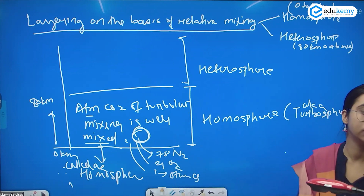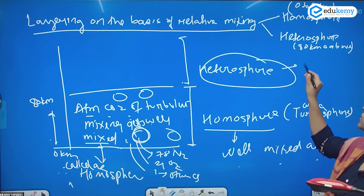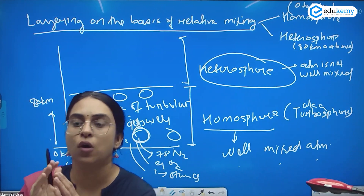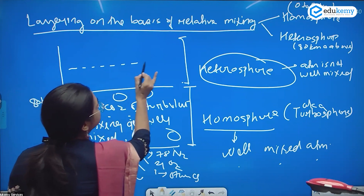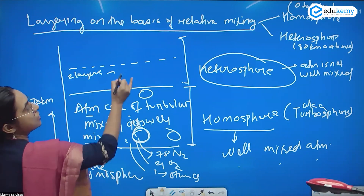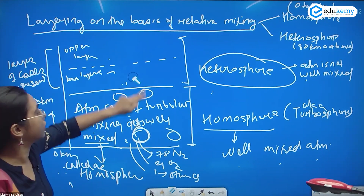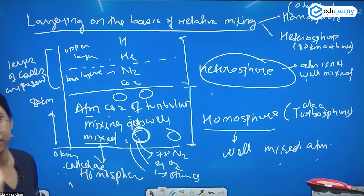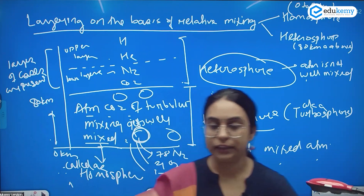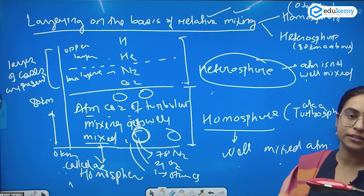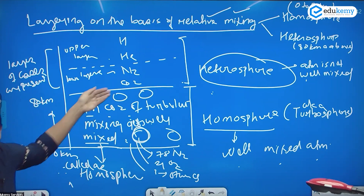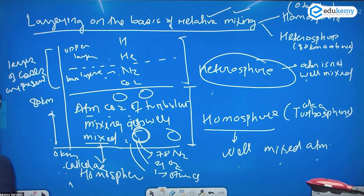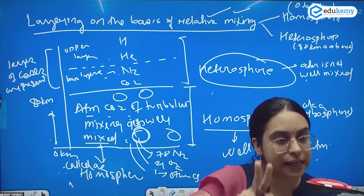In the heterosphere, above 80 kilometers, the atmosphere is not well mixed. Because the atmosphere is not so well mixed, it has distinct layers: in the lower layer you have nitrogen and oxygen (N₂, NO₂), and in the above layers you have hydrogen and helium. This was the second way of the layering of the atmosphere — with respect to relative mixing: up to 80 kilometers is homosphere, above 80 kilometers is heterosphere with stratified layers of different gases.